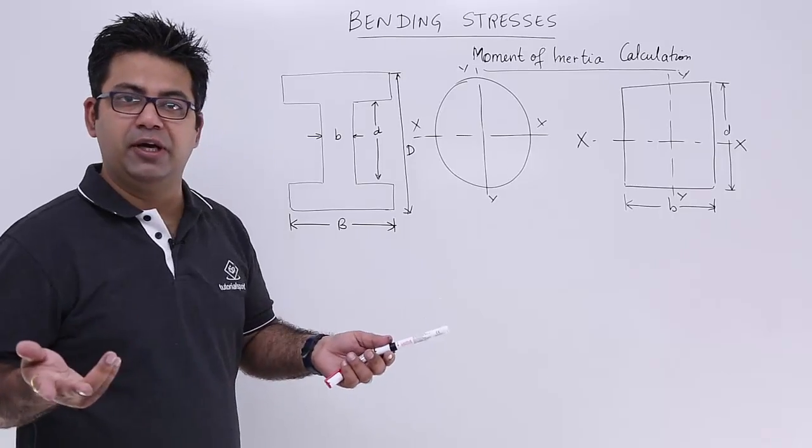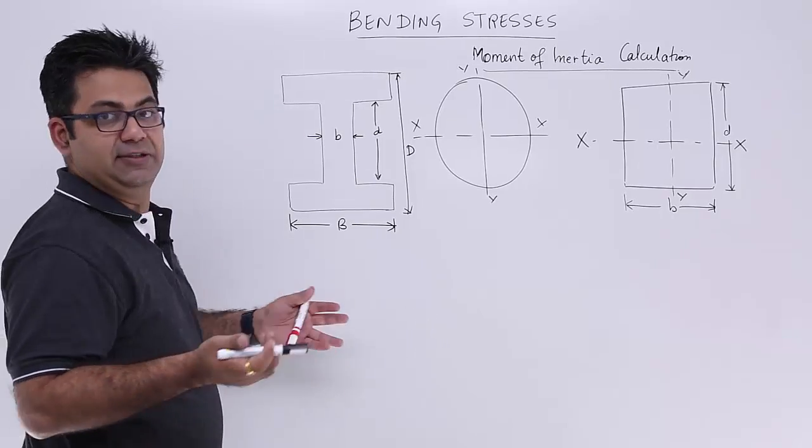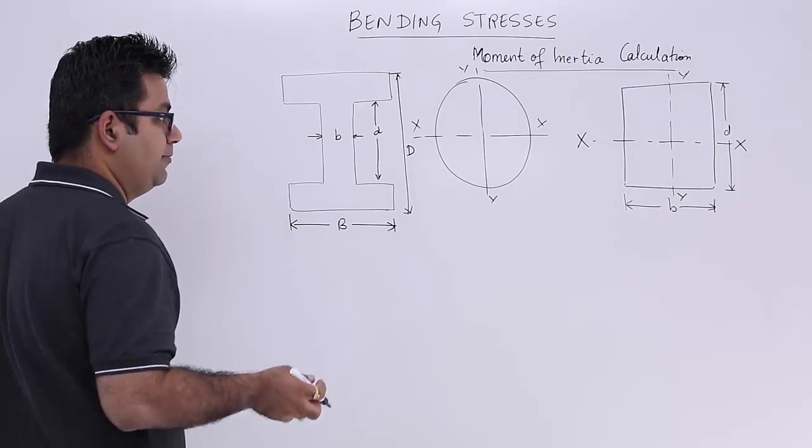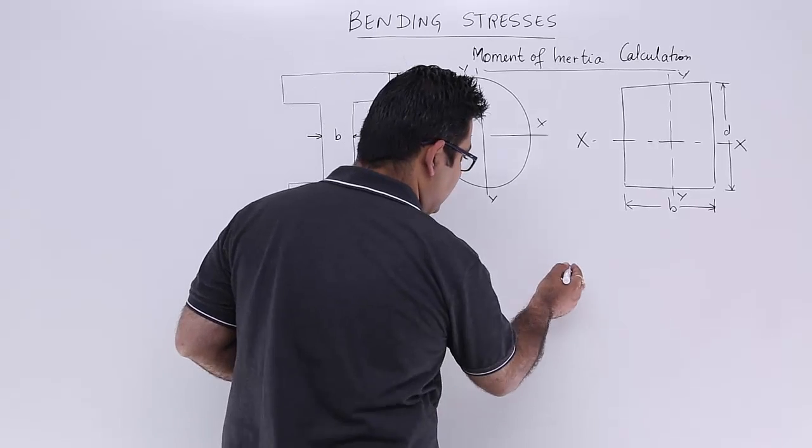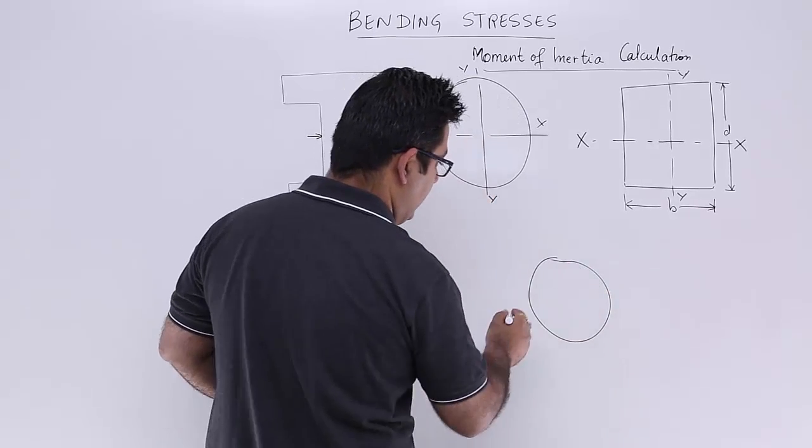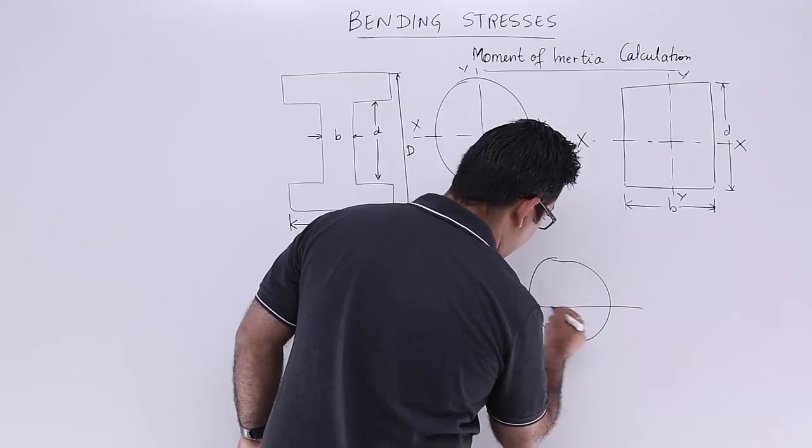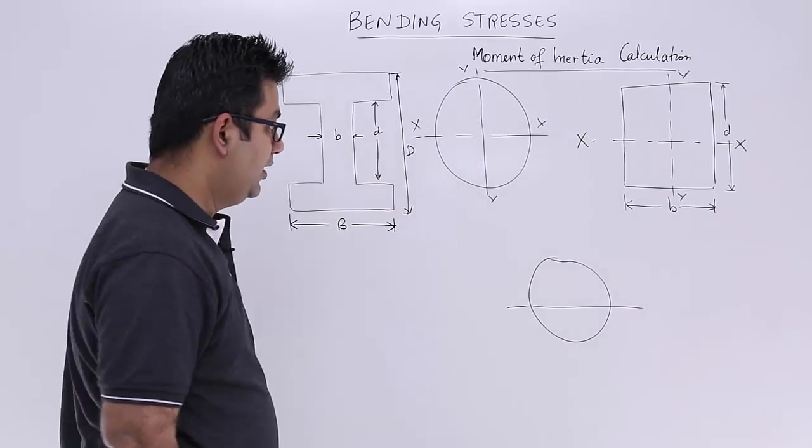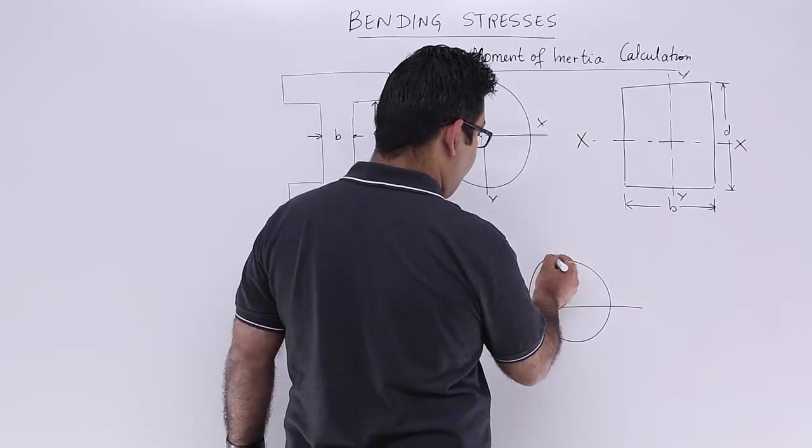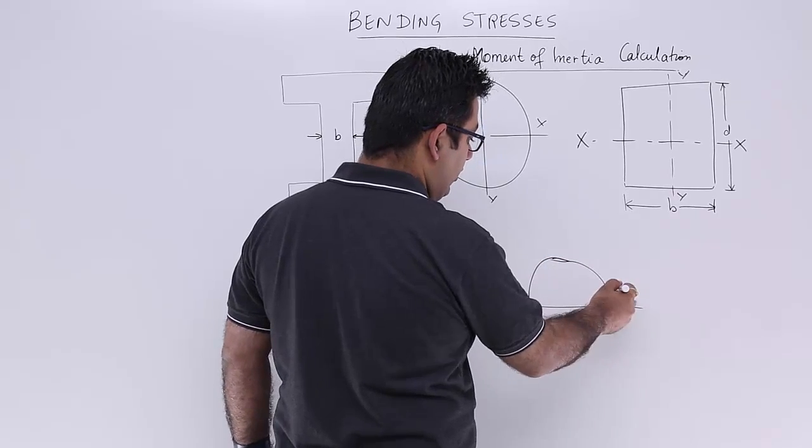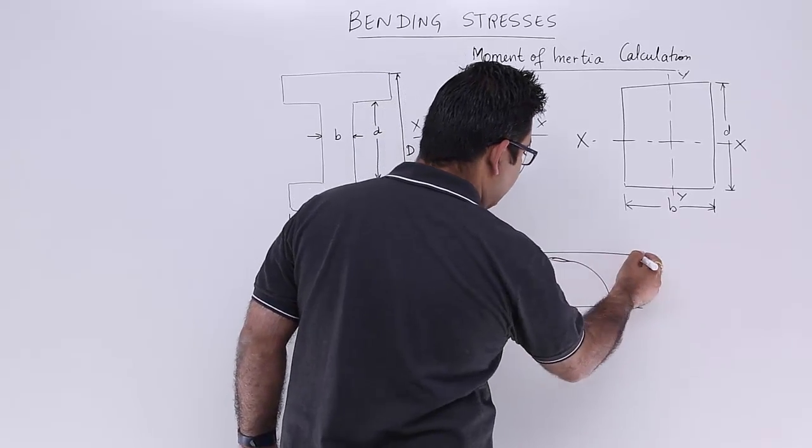Now, moment of inertia about an axis - if you have to understand that, let us say this is any body and this is the axis or the centroidal axis. And I would say this is the centroidal axis and this is any other axis.